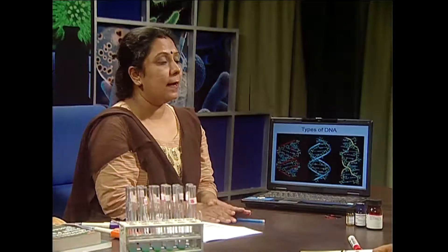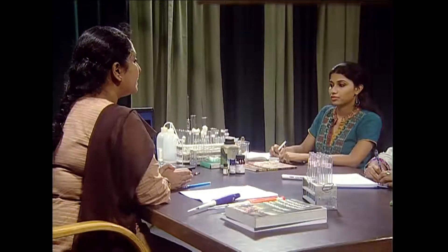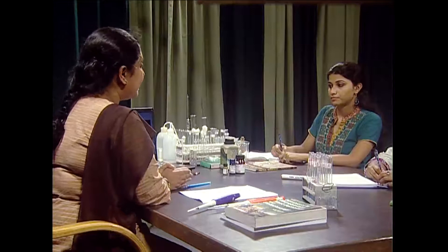B-DNA is quite normal, that is found in all living systems, but it varies according to pH and rise from A-DNA. The three different types of DNA vary according to alignment, structure, rise, and turn per rise. Z-DNA is actually a synthesized one, but A and B-DNA are naturally found.